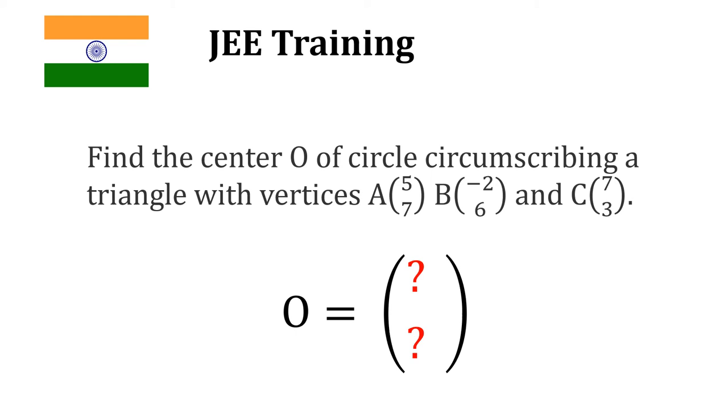Hey guys, this is Ulrich from Nostalgic Mathematics. Today we will try to find the center O of a circle circumscribing a triangle with vertices A(5,7), B(-2,6), and C(7,3).